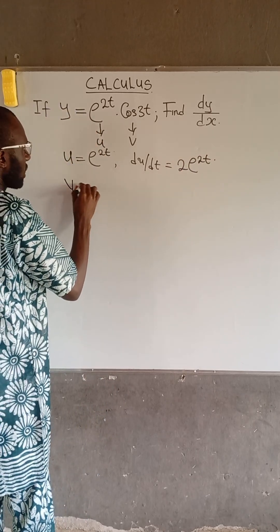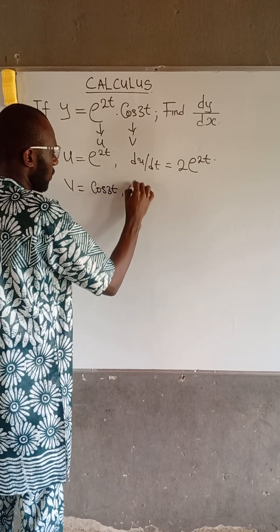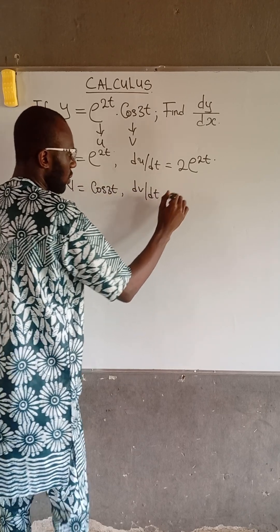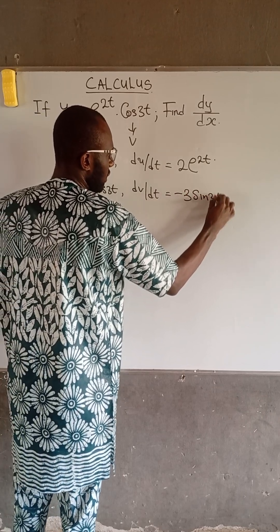Also, v is equal to cos 3t, so therefore dv over dt will be equal to minus 3 sin 3t.